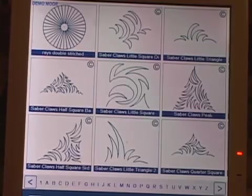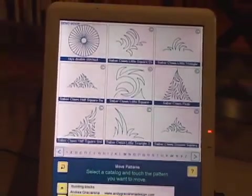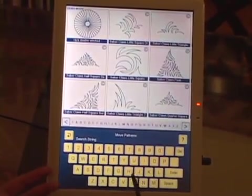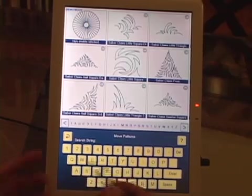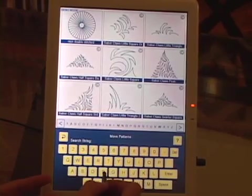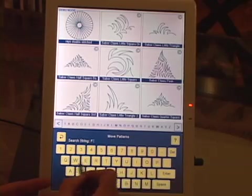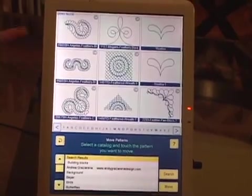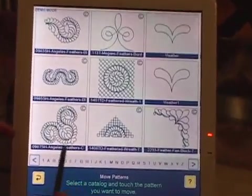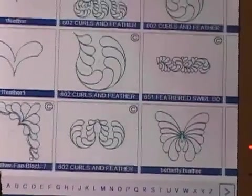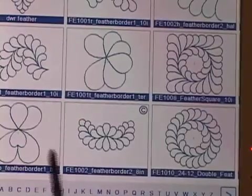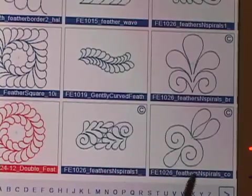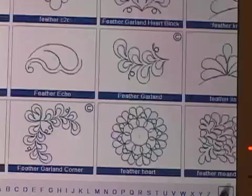Now we have another way to search for patterns. If I touch this search button, up comes the keyboard, and I can put in the name of a pattern. For instance, if I'm looking for a feather, I can go feather, enter, and it finds all the patterns which have feather somewhere in their name. It doesn't matter if they're capitalized or not, it will find any pattern that has the name feather somewhere in its name.